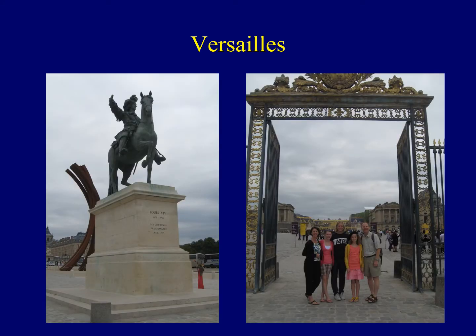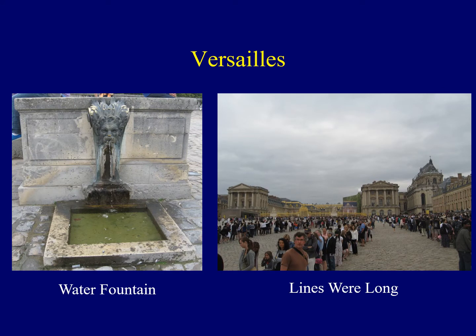On the left, we see a statue of Louis XIV — everyone had to pass by this as they entered. On the right, you see my family at the entrance to Versailles. We're there with our former exchange student, Christiana, who lived with us for a year. The lines were really long. Even the water fountains were elaborate — notice the attention to detail just in a place where you can get some water. This was designed to intimidate any visitor, so that if there was a trade deal or military treaty to be signed, any visitor to Versailles would acquiesce to the French wishes.